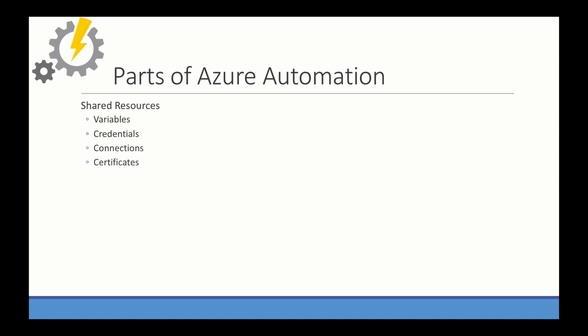Within Azure Automation, there's also the idea of shared resources. These can be a variable that can be called and used from different parts of Azure Automation. Credentials that allow you to securely store username and password objects, or something like a storage account name and a SaaS token. Connections are secure run-as accounts that can be used to interact directly with Azure. And certificates. With the module asset, you can import modules from a gallery to extend the usability of Azure Automation.